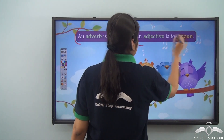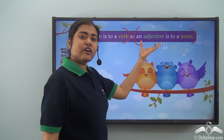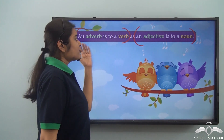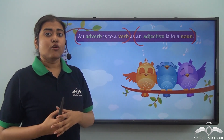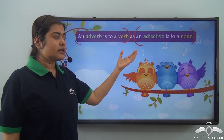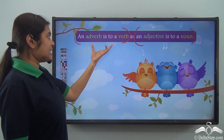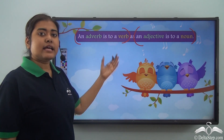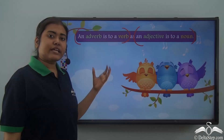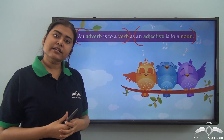Now look at this part: an adjective is to a noun. What is the work of an adjective? To describe or modify a noun. So from these two sets of words, what do we understand? Just like an adverb describes a verb, similarly an adjective describes a noun. So the relationship between an adverb and a verb is the same as the relationship between an adjective and a noun. These two pairs of words are showing a similar kind of relationship.